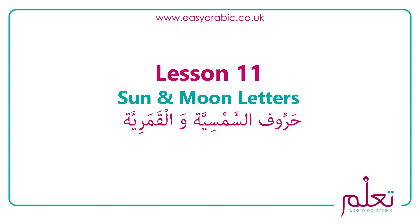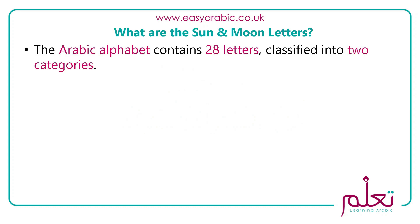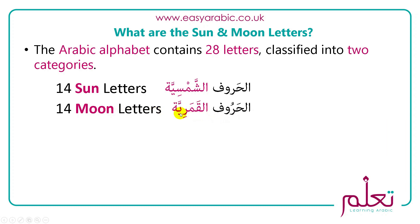Welcome back to lesson 11. In this lesson we're going to look at the sun and the moon letters. The Arabic alphabet contains 28 letters classified into two separate categories. The first is 14 letters called the sun letters, al-haruf al-shamsiya, and 14 called the moon letters, al-haruf al-qamariya.